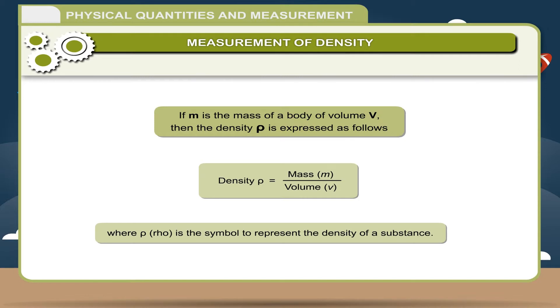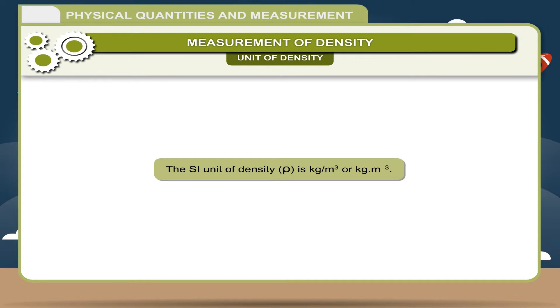Unit of density: The SI unit of density ρ is kg per meter cube, or kg·m⁻³. When we say that the density of water is 1000 kg per meter cube, it means that one cubic meter volume of water has a mass of 1000 kg.